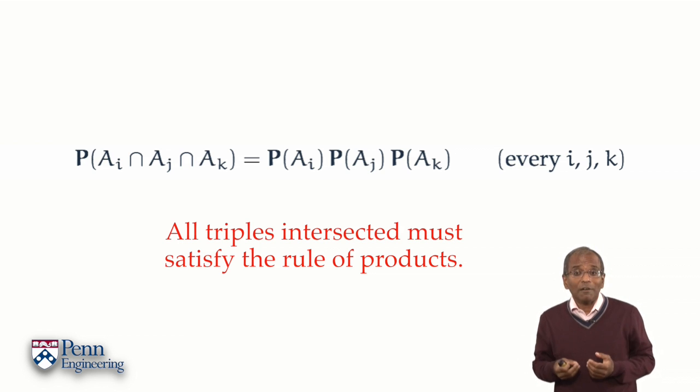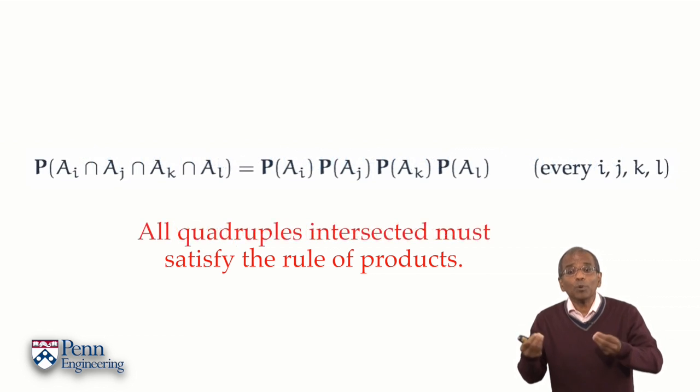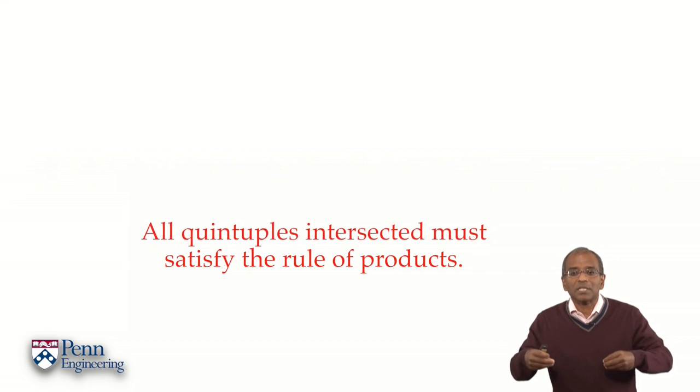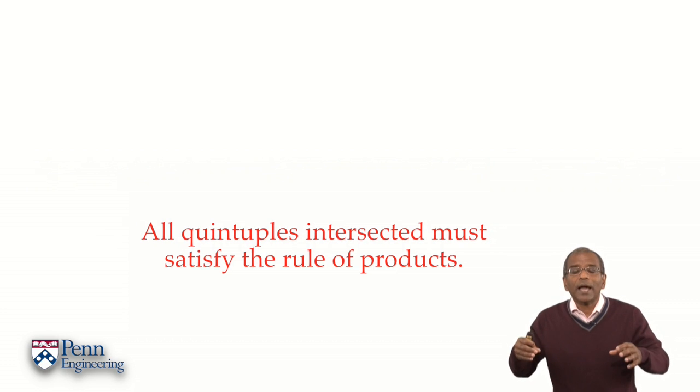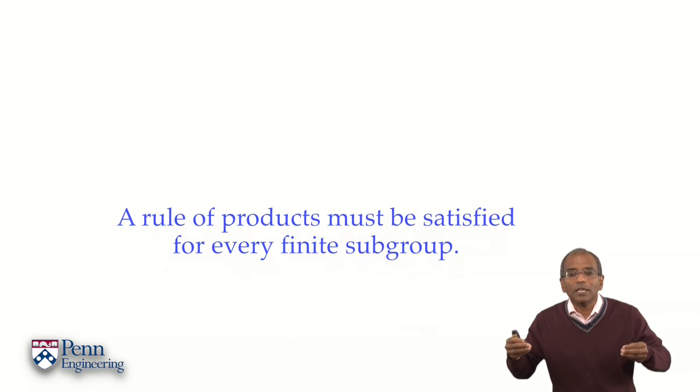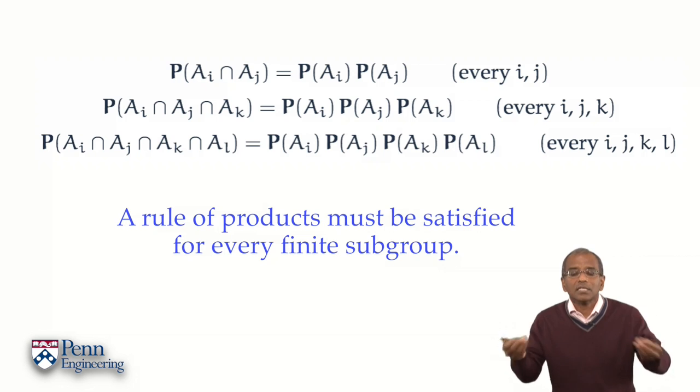But that's not enough. All quadruple intersections must satisfy a rule of products. All quintuple intersections must satisfy a rule of products. In fact, a rule of products must be satisfied for every finite subgrouping.